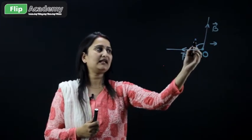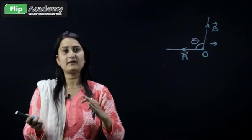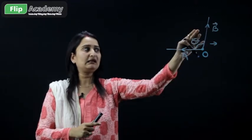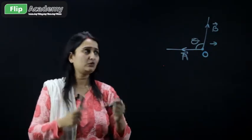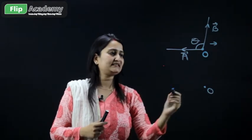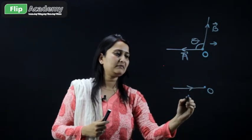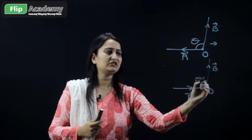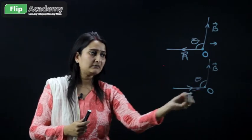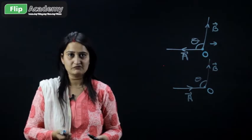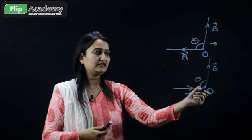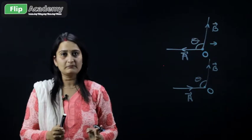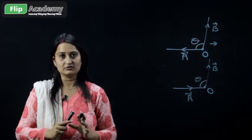The angle between A and B is theta, which is used in the formula. But in the case when A and B have opposite directions — for example, if vector A is coming towards O (convergent) and vector B is going away from O (divergent) — then the parallelogram law and that formula fail.